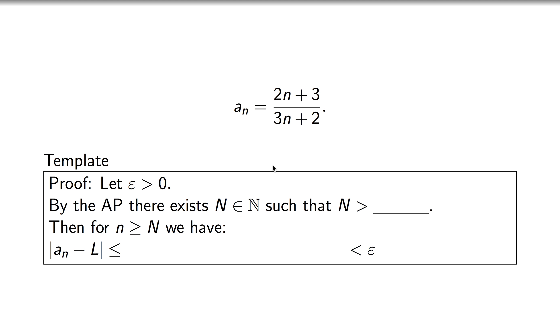So as before, the template is going to be exactly the same. We expect the limit to be two-thirds, and we're going to set up everything with our epsilon being greater than zero.